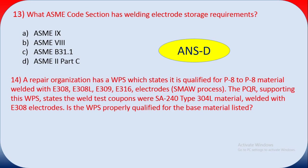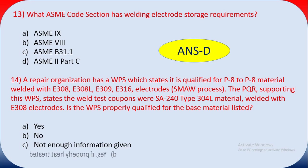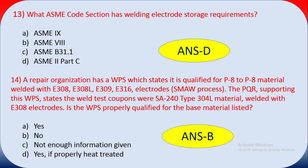Question fourteen: a repair organization has a WPS qualified for P8 to P8 material welded with E308, E308L, E309, and E316 electrodes. The PQR supporting this WPS states that the test coupon was SA240 Type 304L material welded with E308 electrode. Is this WPS properly qualified for the base materials listed? The answer is B — no.